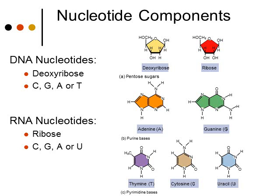In DNA nucleotides, the five-carbon sugar is called deoxyribose. The four different nitrogen bases you can have are cytosine, guanine, adenine, or thymine.